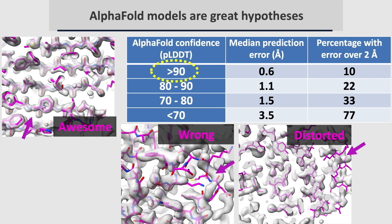Residues predicted with very high confidence, a PLDDT value over 90, have a median error of 0.6 angstroms. However, even for such very high-confidence predictions, about 10% of residues will be over 2 angstroms off. For residues predicted with low confidence, PLDDT values under 70, the median prediction error will be much higher, about 3.5 angstroms.